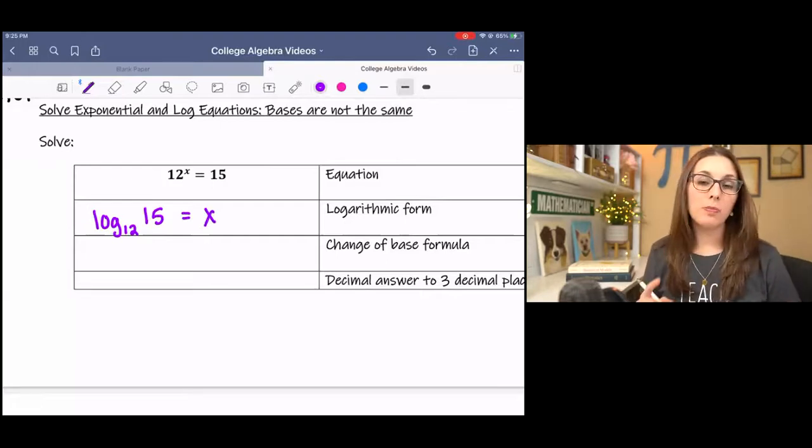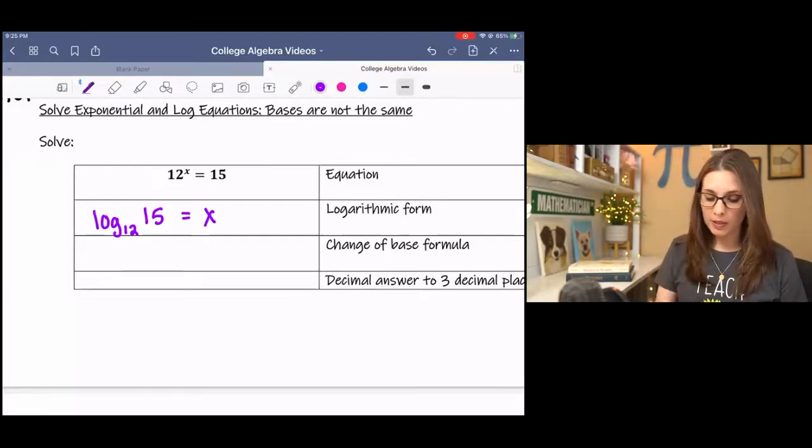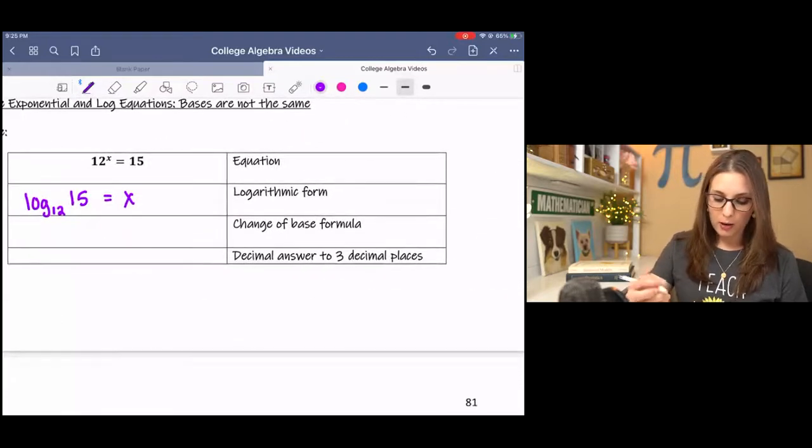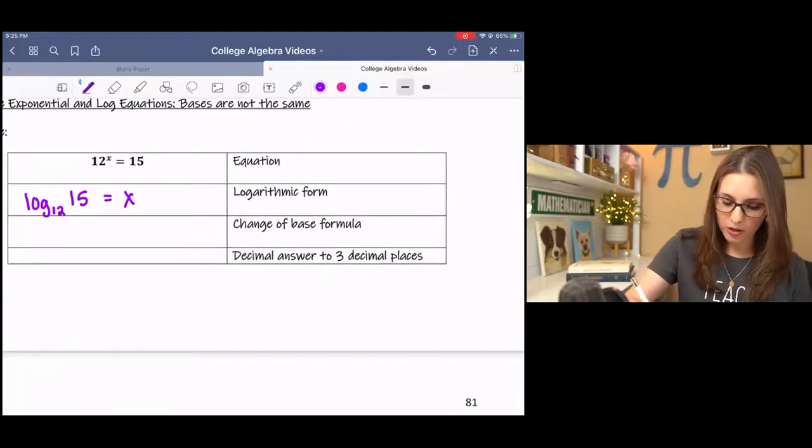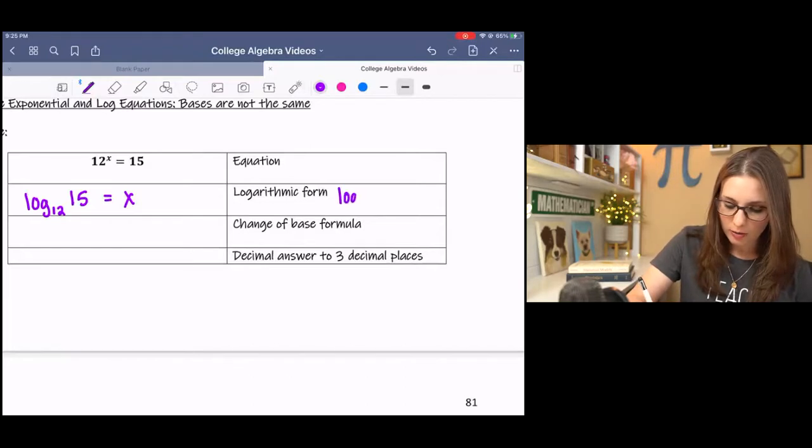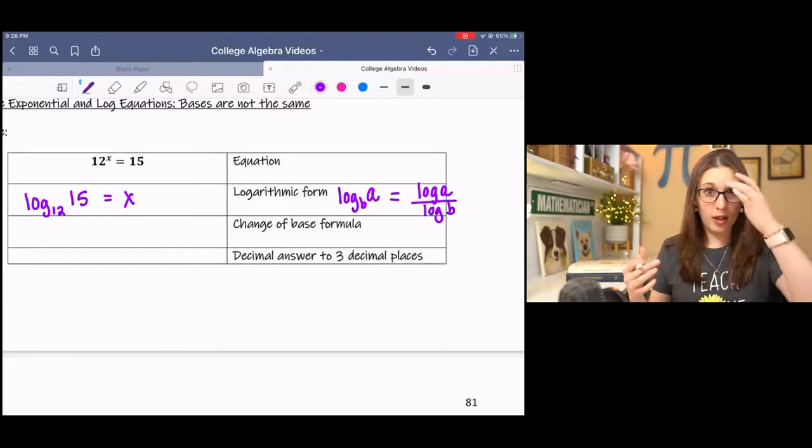And then the change of base formula, that might be something that you're not familiar with. If we have log base b of a, then the change of base says that we can do log a over log b, and that would give us what it equals.